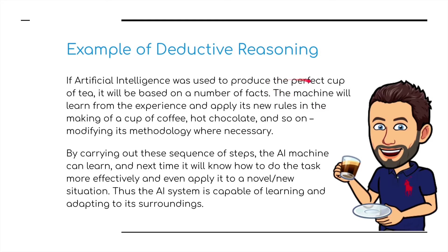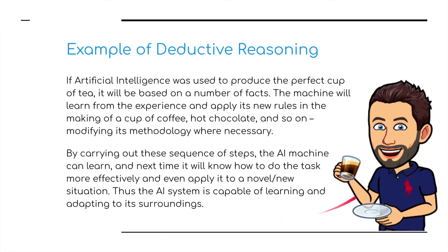Here's an example of deductive reasoning. If Artificial Intelligence was used to produce the perfect cup of tea, it would be based on a number of facts. The machine will learn from the experience and apply its new rules in the making of a cup of coffee, hot chocolate, and so on — taking what it learned from making tea and using those rules when making other hot drinks, modifying its methodology where necessary. By carrying out these sequences of steps, the AI machine can learn, and next time it will know how to do the task more effectively, and even apply it to a novel new situation. Thus, the AI system is capable of learning and adapting to its surroundings.